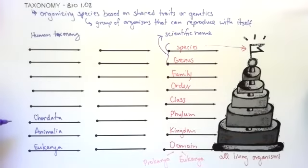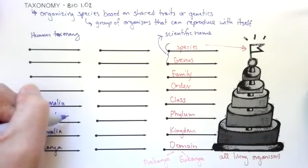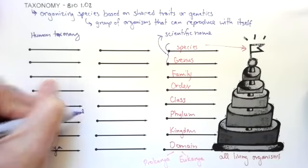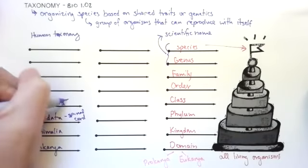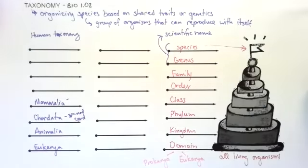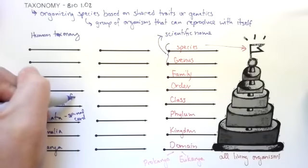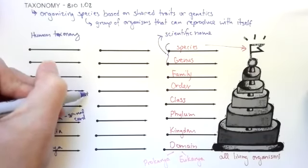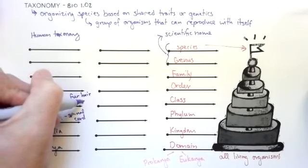Under chordata, then, we have things like snakes, birds, and reptiles. Everything that has fur and nurses their young. Let's put what some of these traits are. Chordata is a spinal cord. Mammals, the traits that they have, they have fur or hair. They nurse their young with milk. They produce milk.